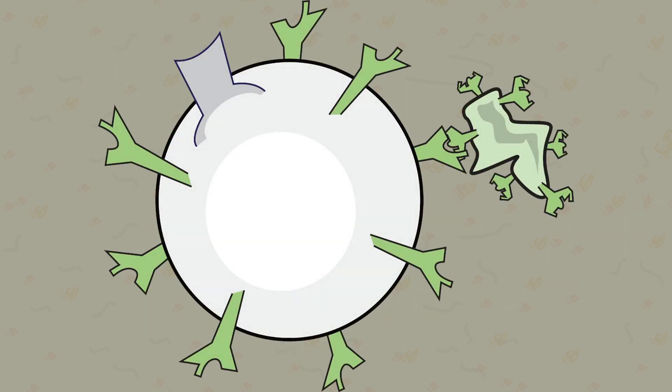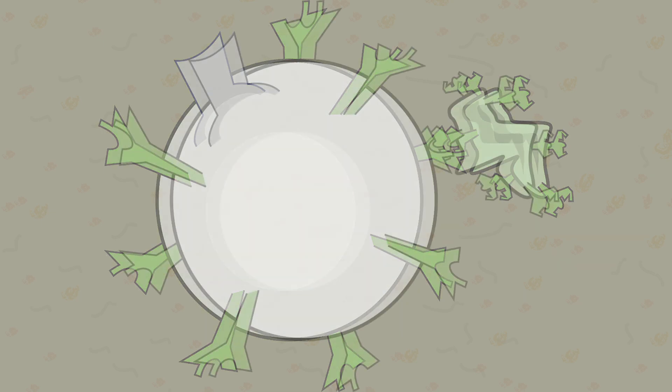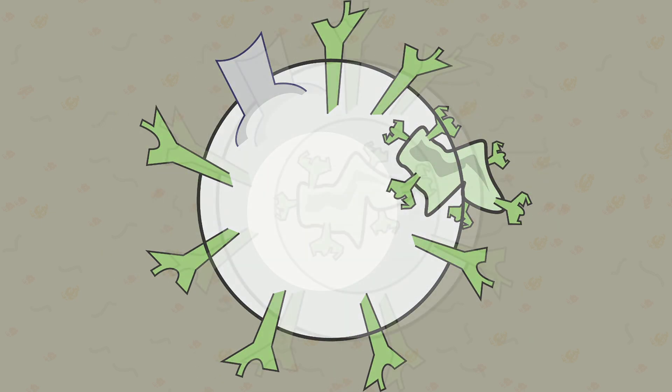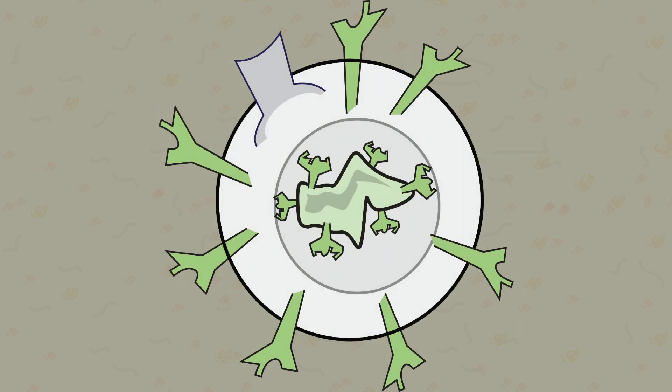When the phagocyte detects a foreign substance, it will bind to it. Then it begins a process of wrapping around the antigen until it is completely engulfed inside the phagocyte.